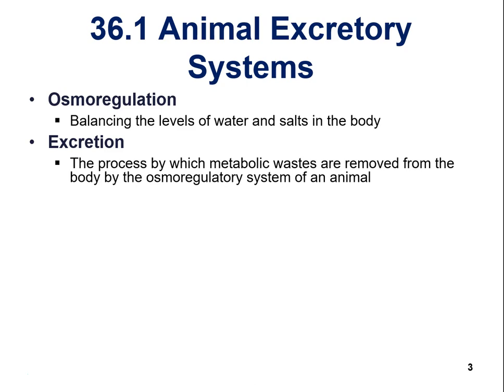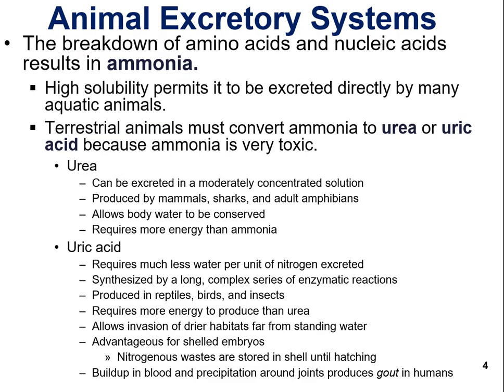Two key terms here: osmoregulation refers to balancing the level of water and salts in the body. An excretory system is going to do that — balance levels of water and salts. Excretion is the process by which metabolic wastes are removed from the body by the osmoregulatory system of an animal. If we're talking about the urinary system in humans, those wastes are removed through the urine.